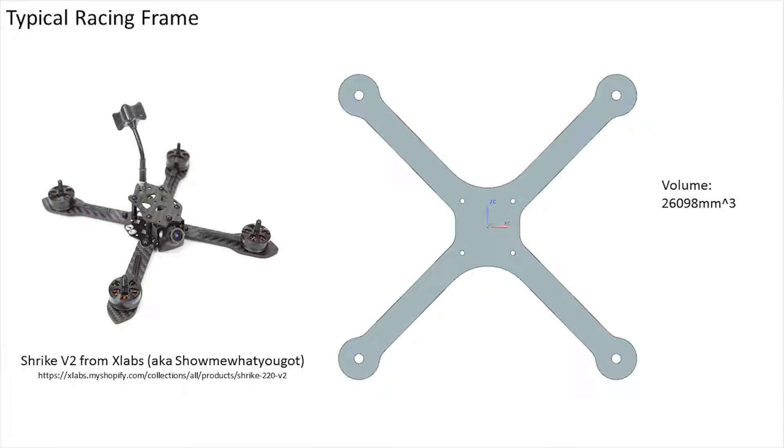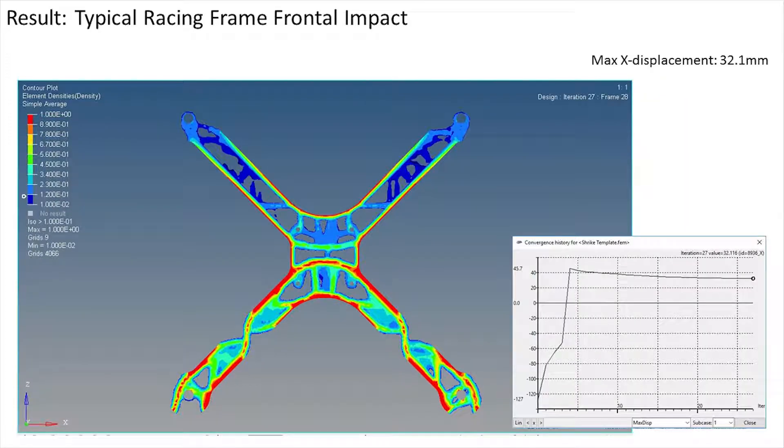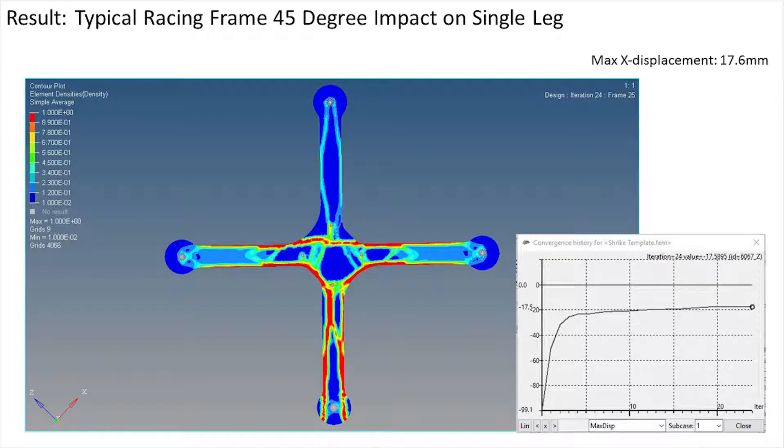The starting volume was 26,000 millimeters cubed. These are the results of running the topology optimization through HyperWorks showing a max x displacement in a frontal impact of 32.1 millimeters and a side impact from 45 degrees of 17.6 millimeters x displacement.